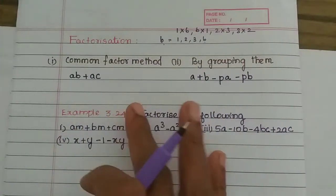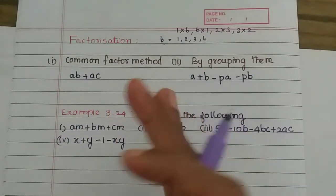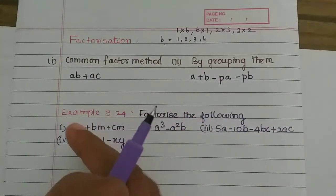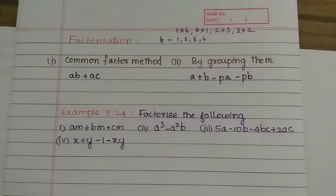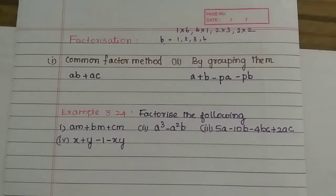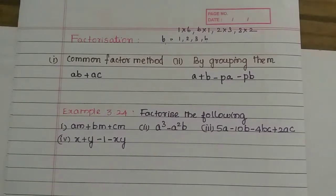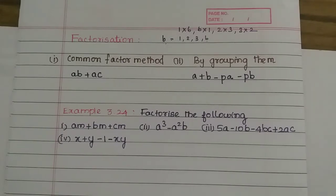Now, we have to apply this in the polynomial. So in a polynomial, we can factorize. In a square, we will multiply with linear factors. So factorization has 2 methods. We will check these 2 methods.